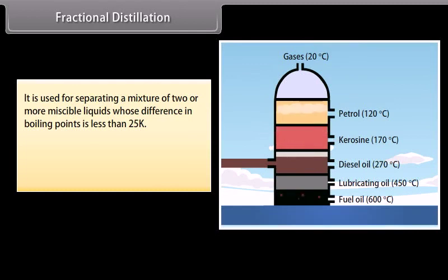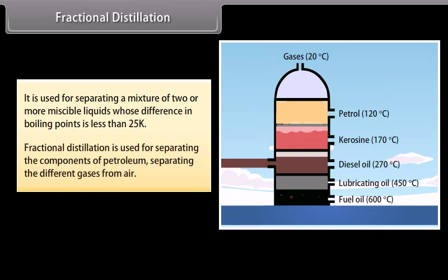Fractional distillation: It is used for separating a mixture of two or more miscible liquids whose difference in boiling points is less than 25K. Fractional distillation is used for separating the components of petroleum, separating different gases from air, etc.